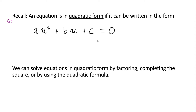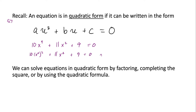For example, if we had something like 10x to the fourth plus 11x squared plus 9 equals zero, this would be an example of an equation in quadratic form, because it can be written in that form. In this case, our U would be equal to x squared. We can solve equations in quadratic form by factoring, completing the square, or by using the quadratic formula. We'll also see an example where we solve it with a combination of factoring and taking square roots.